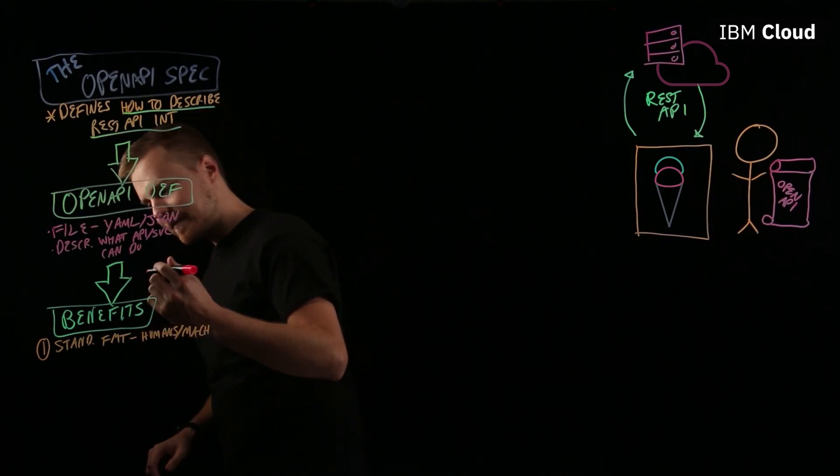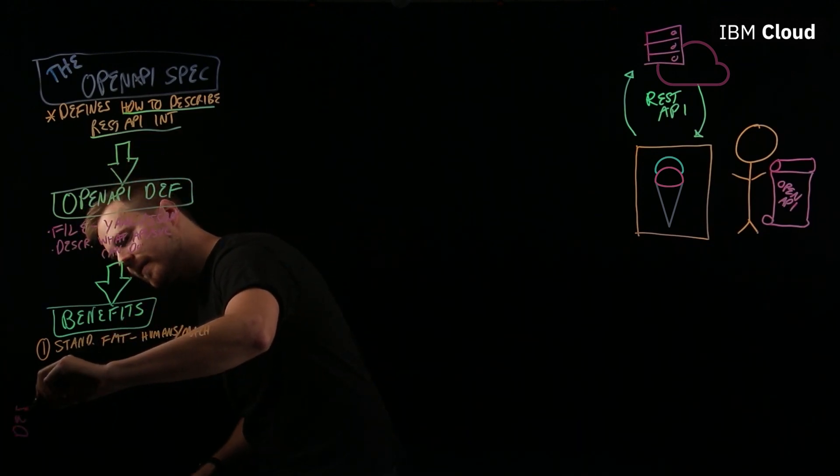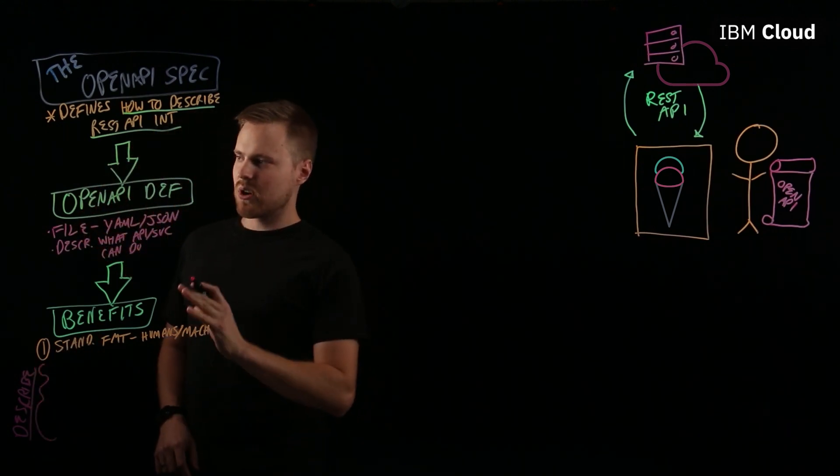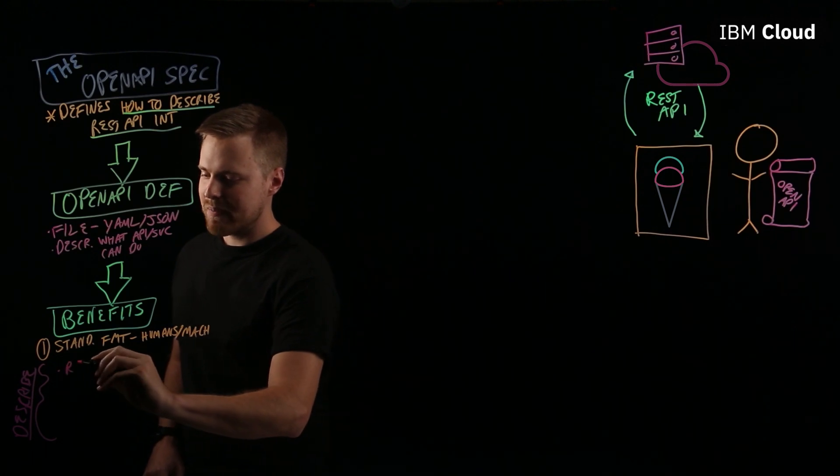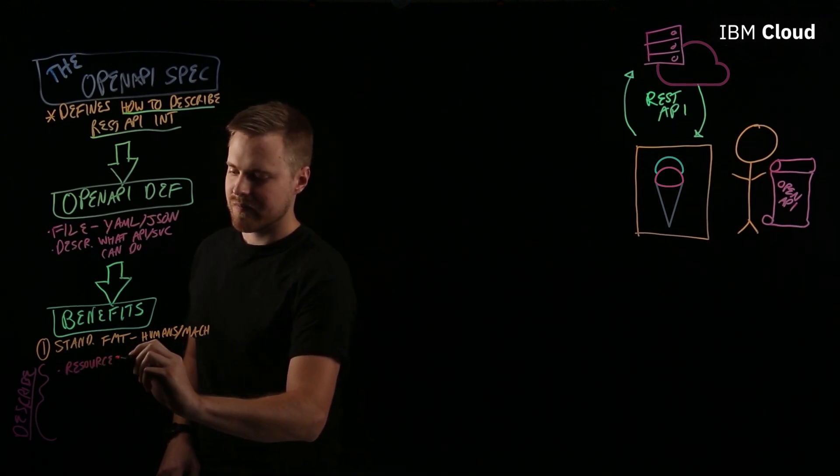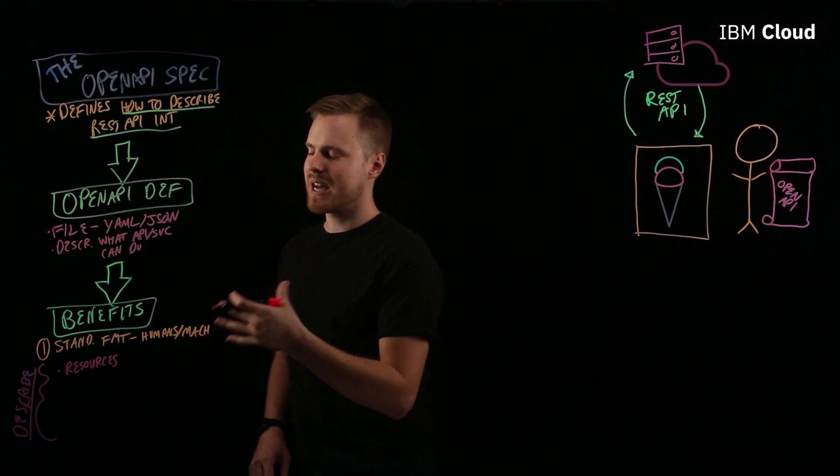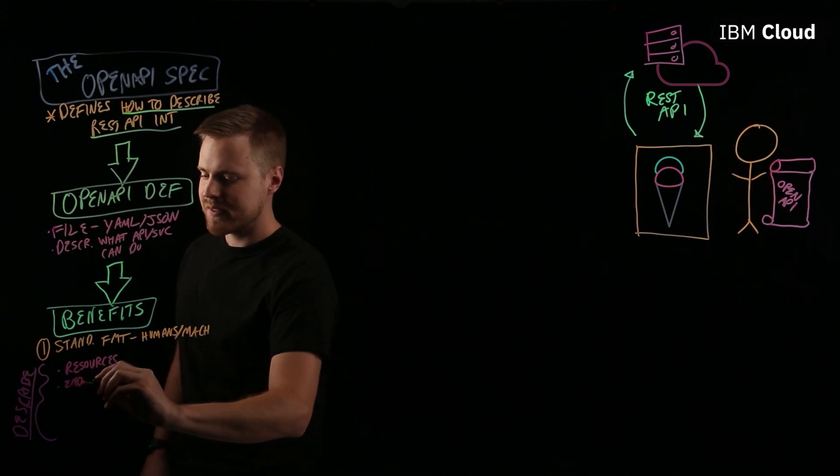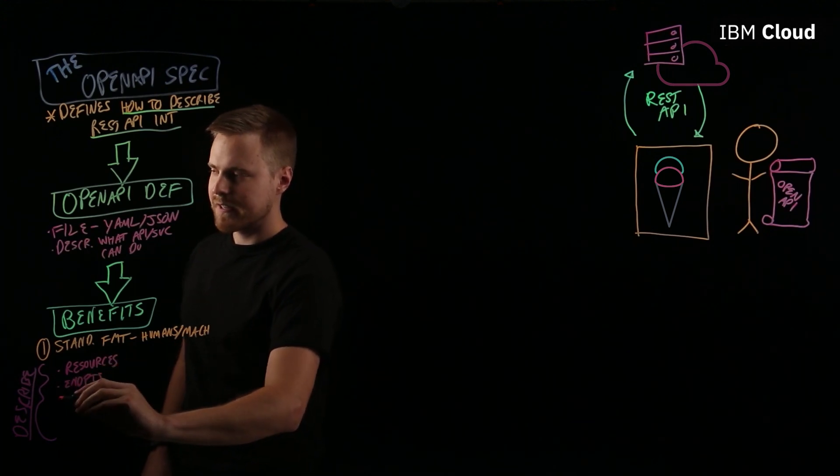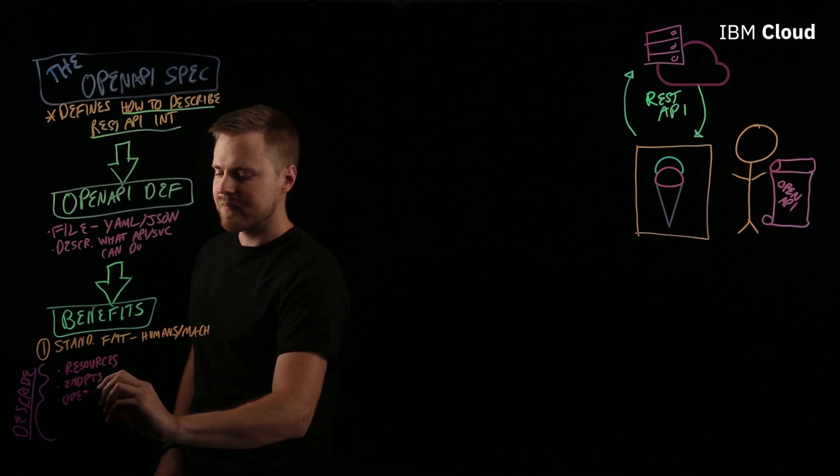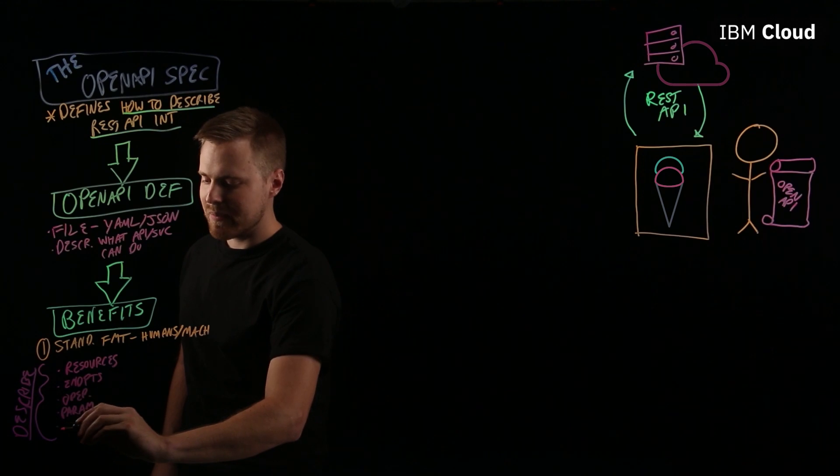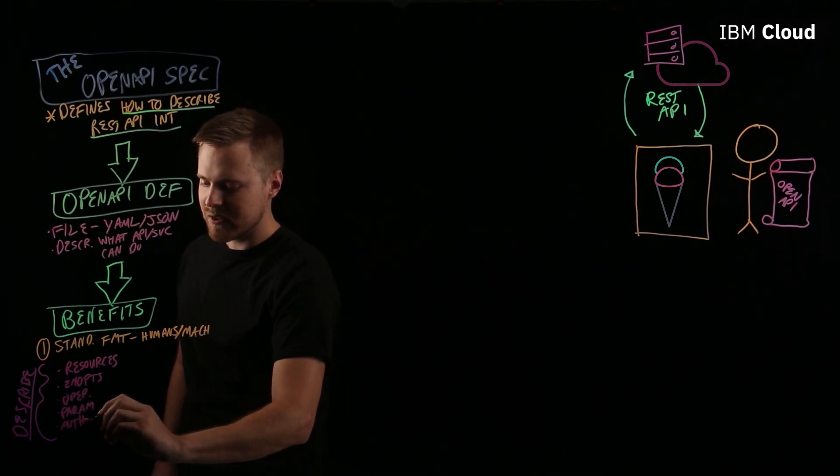So, with an OpenAPI definition, you can describe a few things. First of all, you can describe the REST API's resources, including properties or data types. You can describe endpoints, operations, parameters, and the REST API's authentication or authorization.